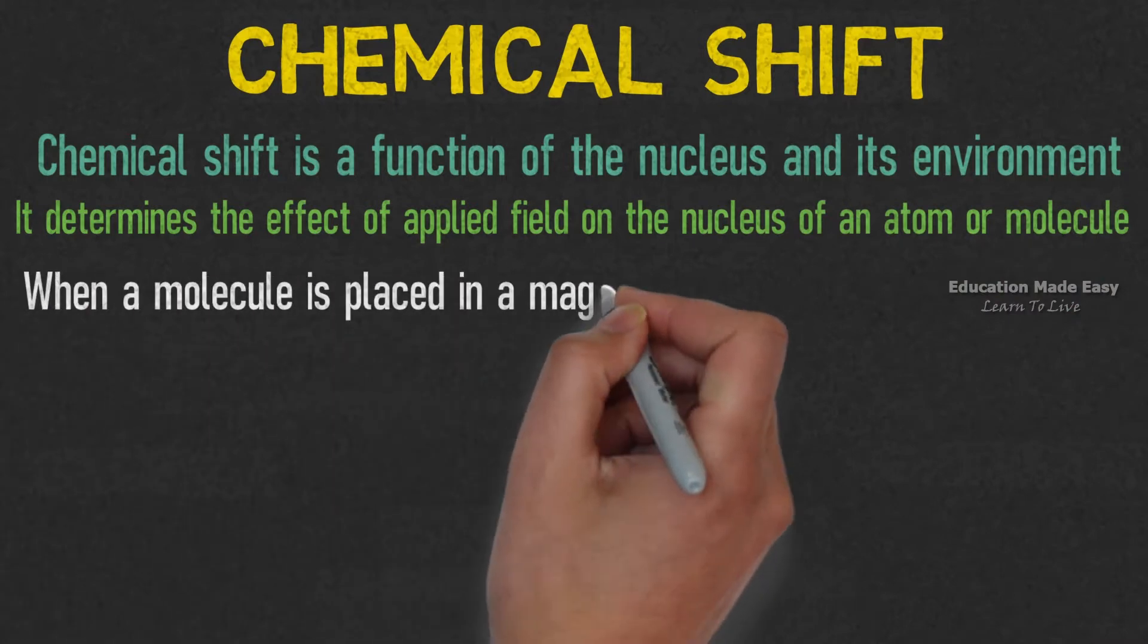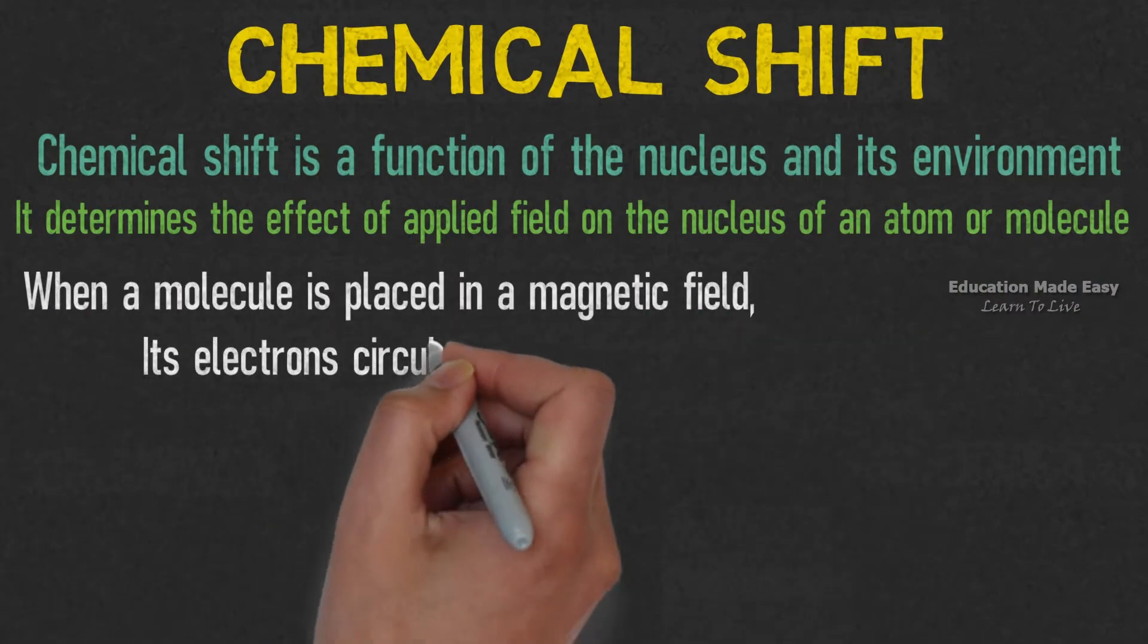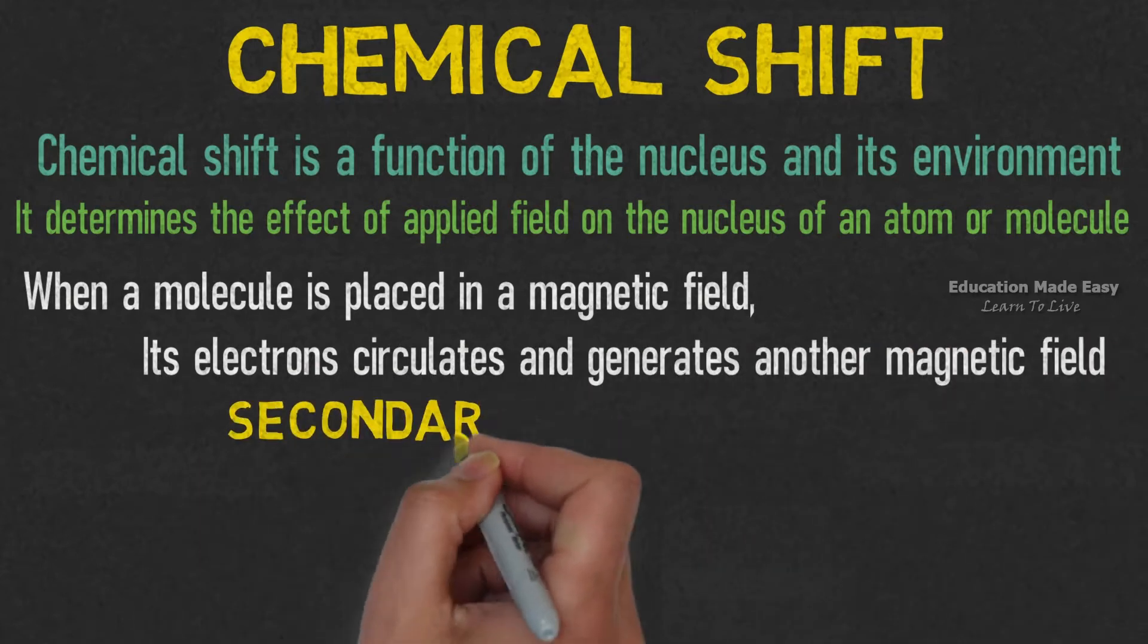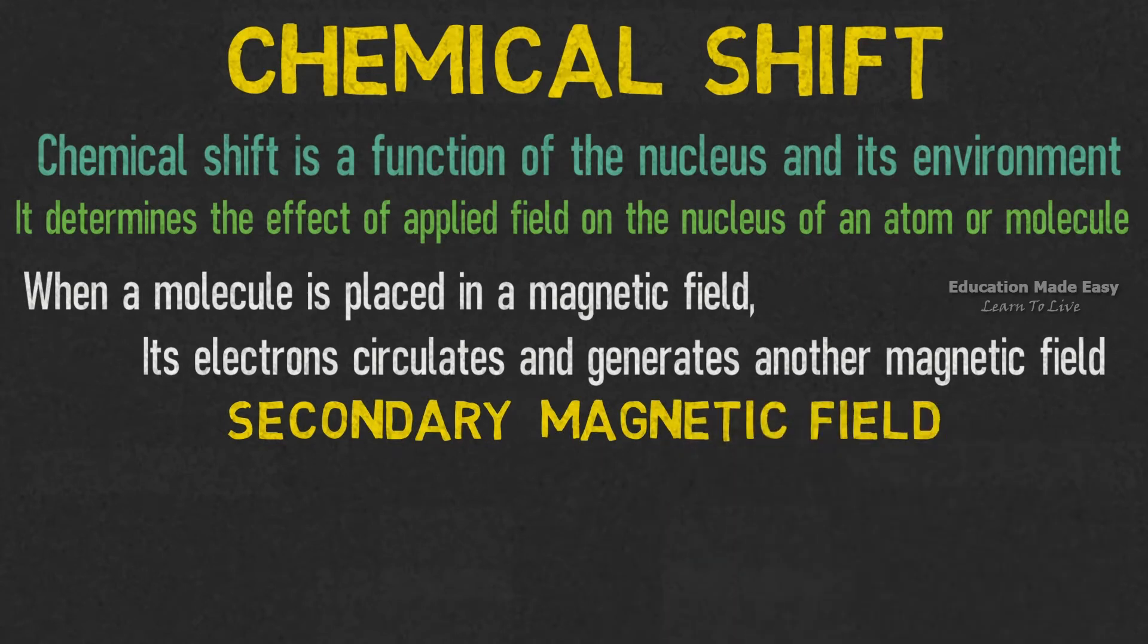When a molecule is placed in a magnetic field, its electron circulates and generates another magnetic field. This induced magnetic field is called secondary magnetic field.